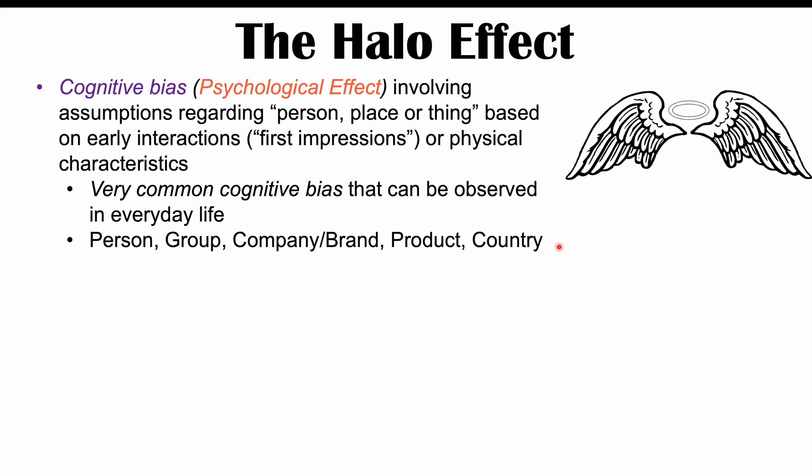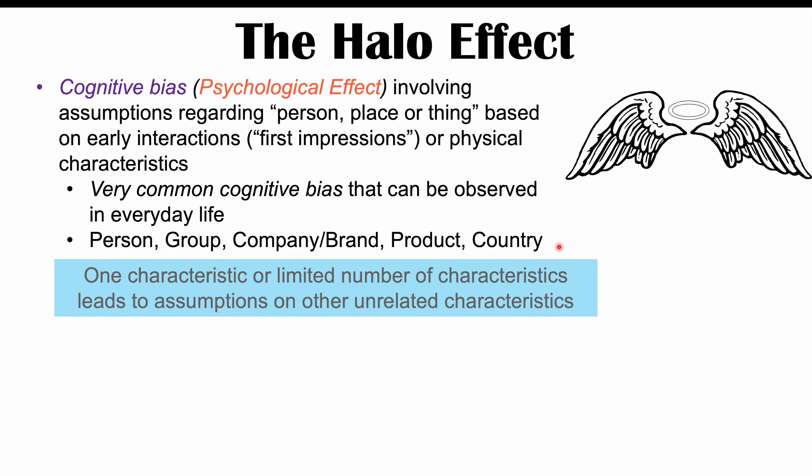What can happen is that this can change the way you actually make assumptions about that particular thing. More specifically, the halo effect is where one characteristic — or a limited number of characteristics — leads to assumptions about other unrelated characteristics.